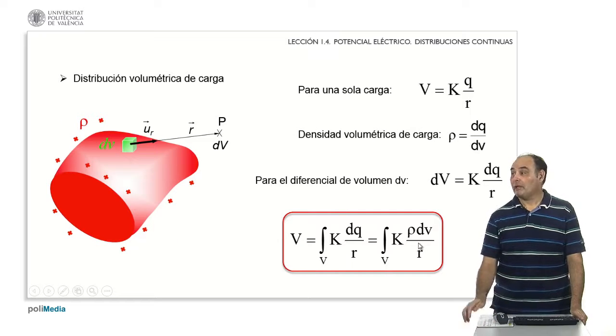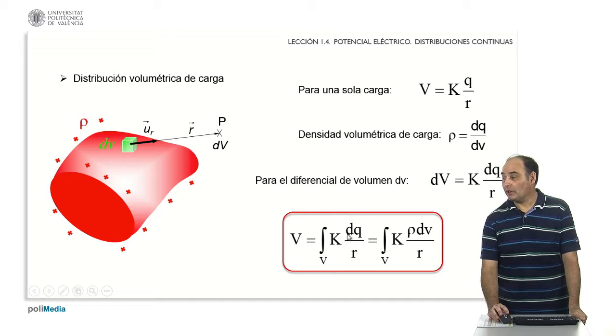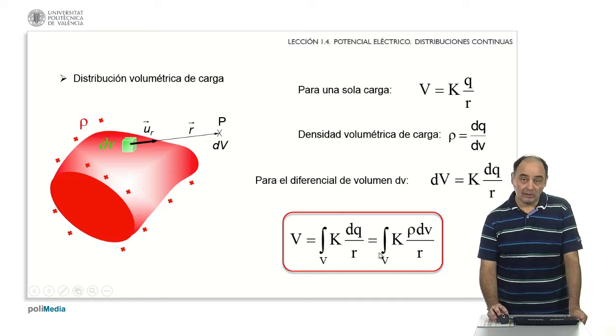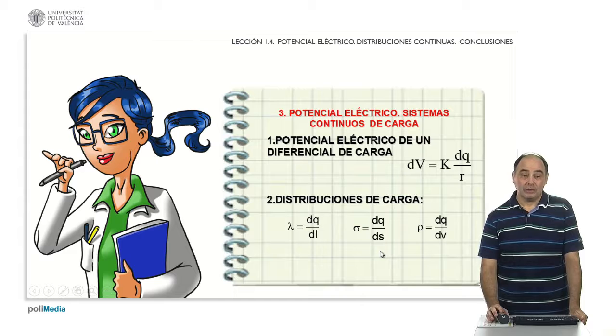The same thing will happen in the case of a volumetric distribution. Everything is exactly the same, only that when I have to use the differential of q, it will be ρ for differential of v, dv, that is, volumetric density for small volume. With these changes, that instead of being λ for differential of l or σ for differential of s, it is ρ for differential of v, and of course it does not integrate a line or a surface, but a volume. The expressions, as you can see, are equivalent.